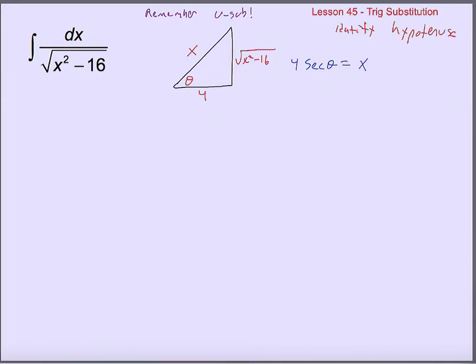The reason I use secant rather than cosine is because I'd rather keep my x's in the numerator rather than the denominator. So using hypotenuse over adjacent — secant — is preferable. If x equals 4 secant theta, there's no x in here to take out directly, but I use that to find dx, the differential, which is 4 secant theta times tangent theta d-theta, because the derivative of secant is secant tangent.